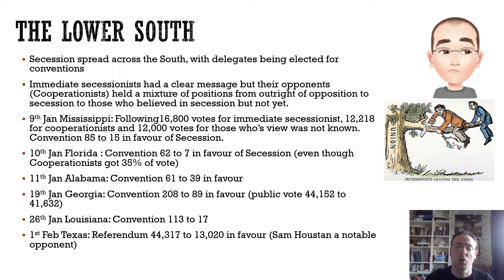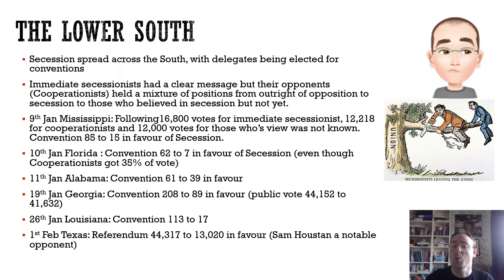Louisiana voted 113 to 17. Texas did it differently — not through convention but by referendum, with a result of 44,000 to 13,000. Sam Houston, already mentioned, was a really notable opponent of secession. He was governor, the hero of Texas, the man who had led them to independence, with the capital named after him. So this was by no means absolutely clear cut.